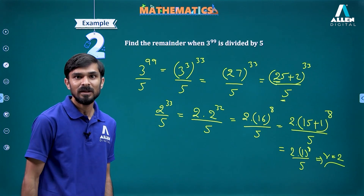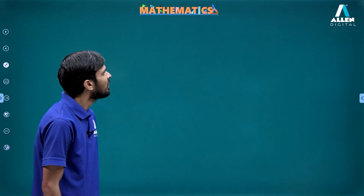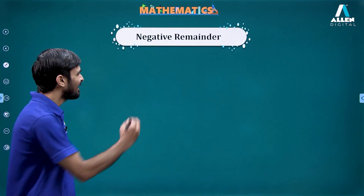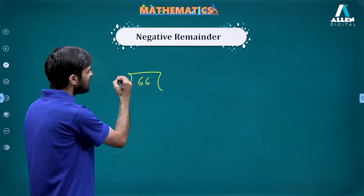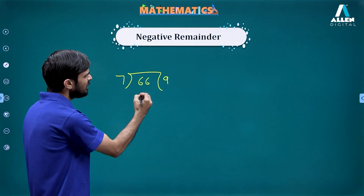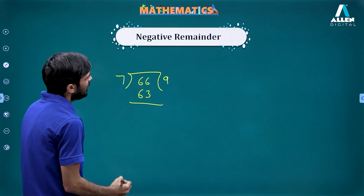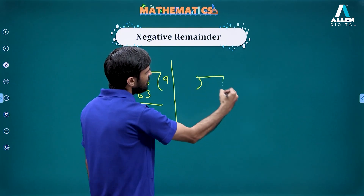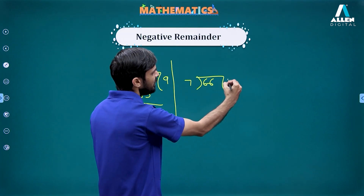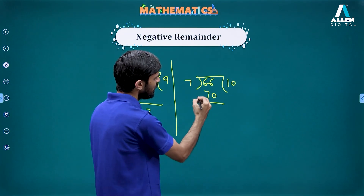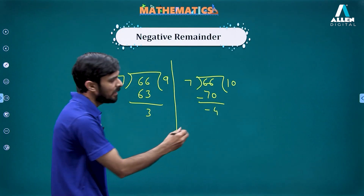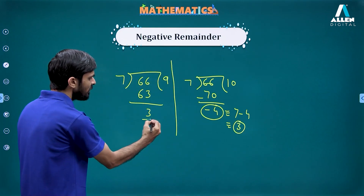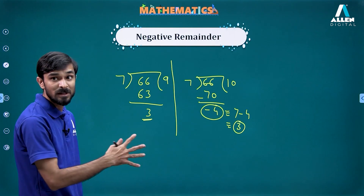But can we make this even simpler? There is something called negative remainder — you can think of it as arising from over-ambitious division. For example, dividing 66 by 7: normally 7 times 9 is 63, giving remainder 3. But if I divide 10 times, that is 70, giving remainder minus 4. This minus 4 is equivalent to 7 minus 4, which is 3 — the actual remainder. That is the concept of negative remainder.